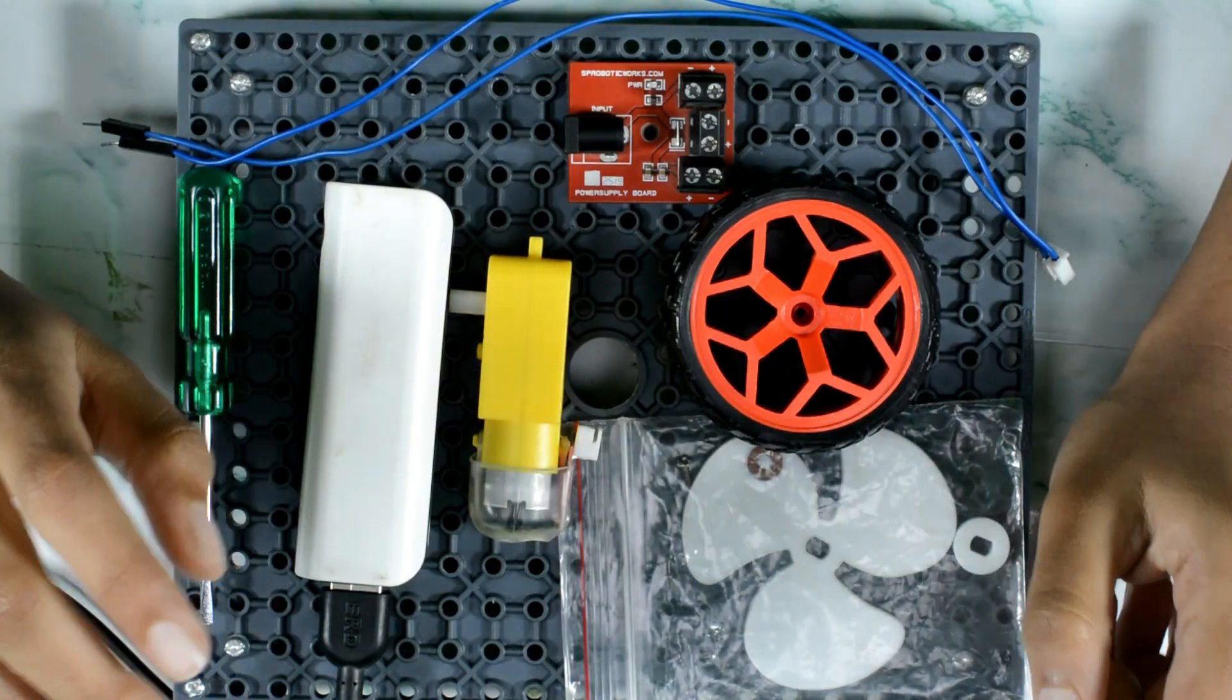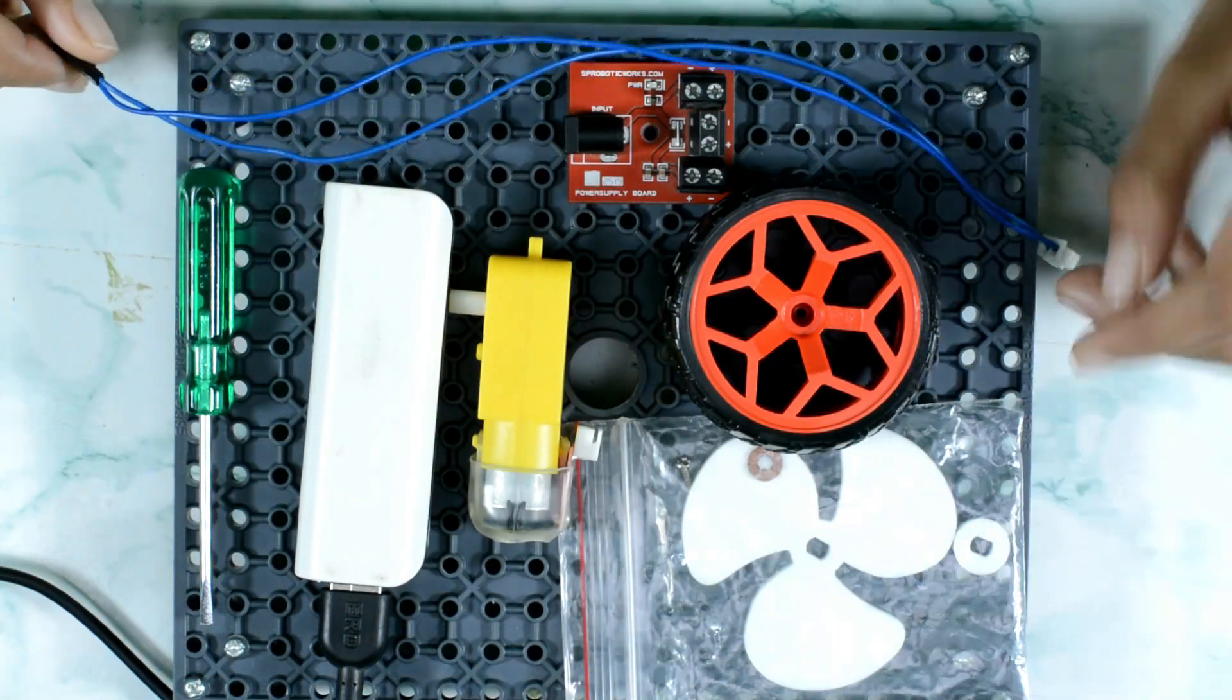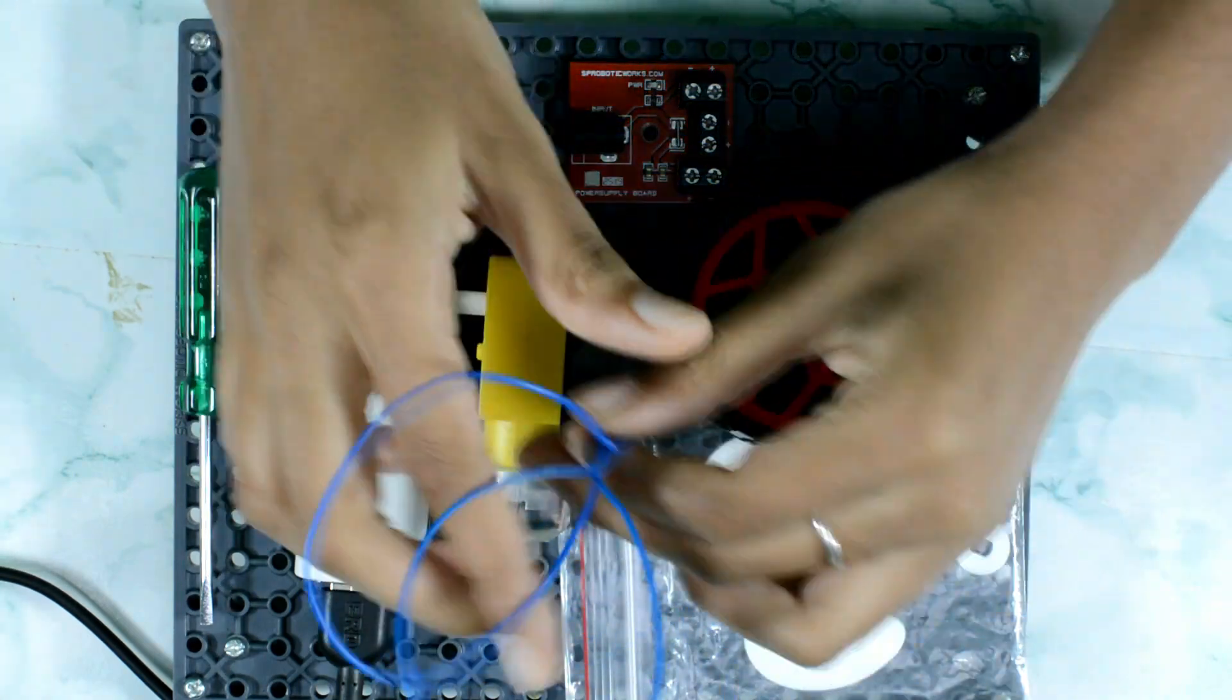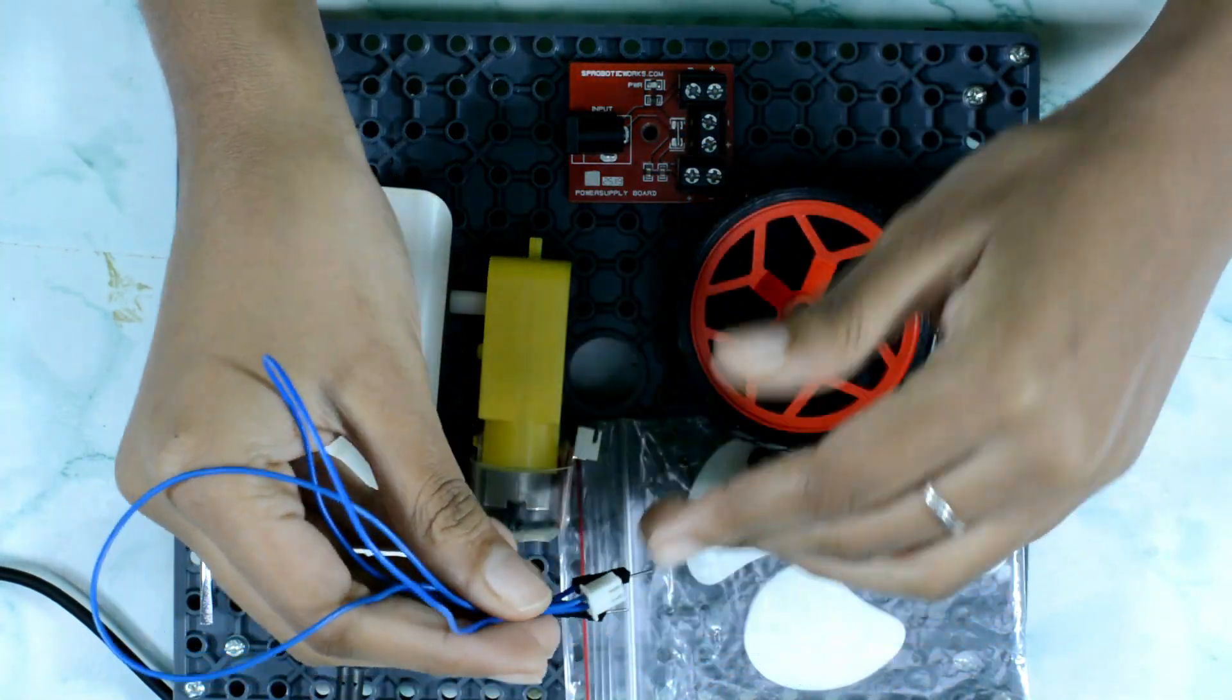For today's activity, the required components are: one 25 centimeter female to male jumper wire, one wheel, one fan set, power supply board, motor, battery, and a screwdriver.